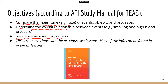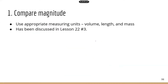This lesson overlaps with the previous two lessons, so a lot of the information can be found there. Today I'm just going to go over the new information that does not overlap with previous lessons, so this is going to be a short lesson. The first topic is to compare magnitude — basically finding the appropriate measuring units for volume, length, and mass, which we covered in lesson 22.